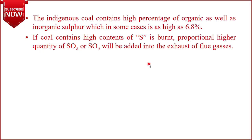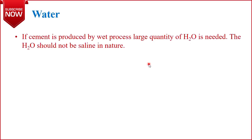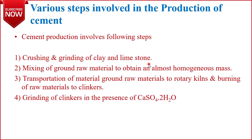The next raw material is water. There are two processes for making cement: the dry process and the wet process, and water is used in the wet process. Since water is one of the major materials used, it must be pure — it should not have any dissolved, undissolved, or suspended salts or solids. Before using water in cement manufacturing, we must treat it to obtain pure water.